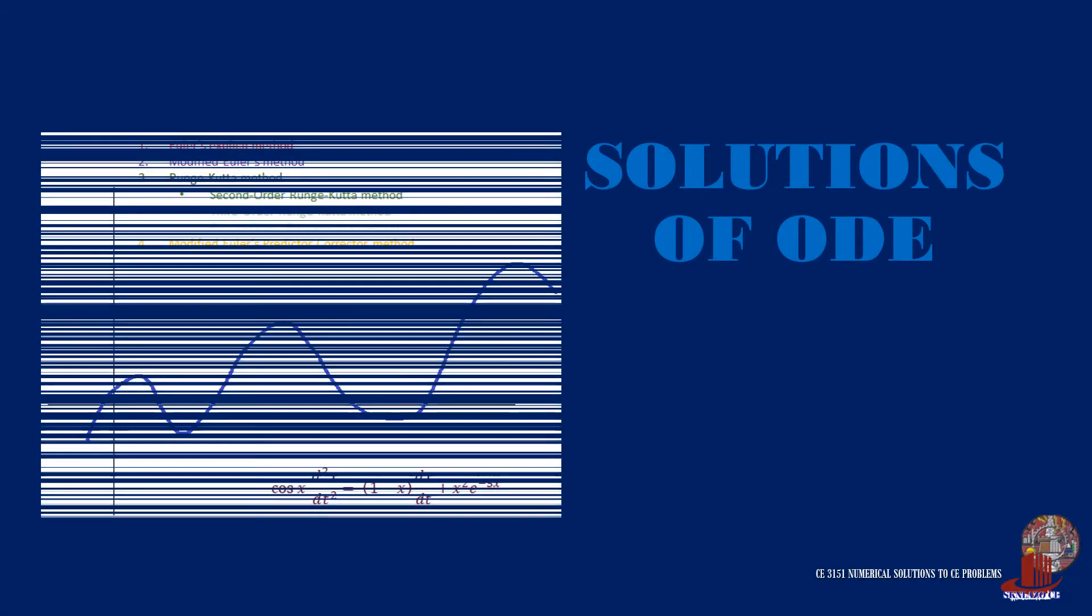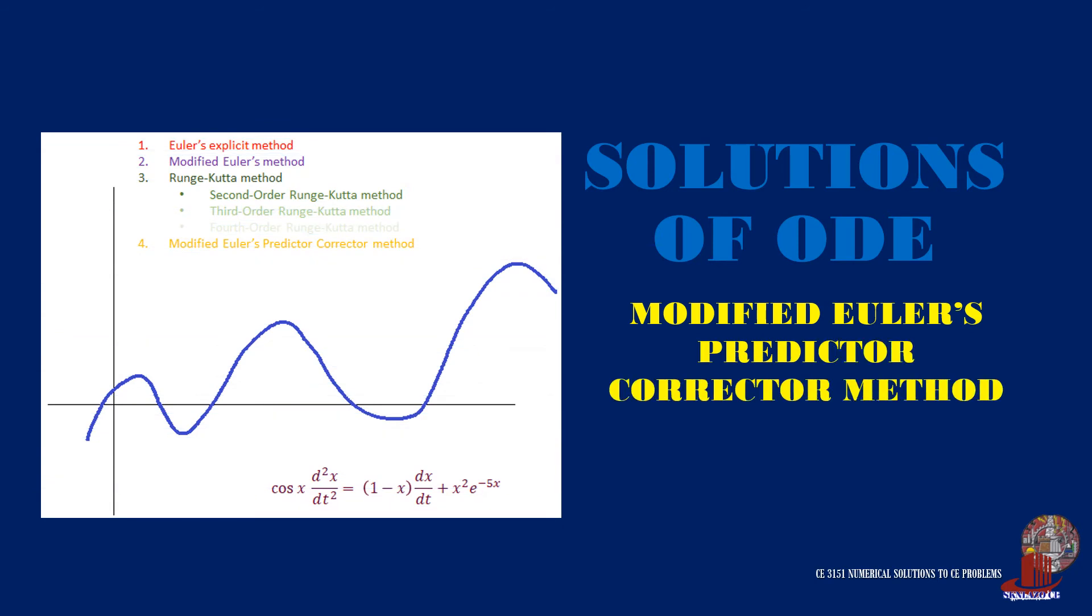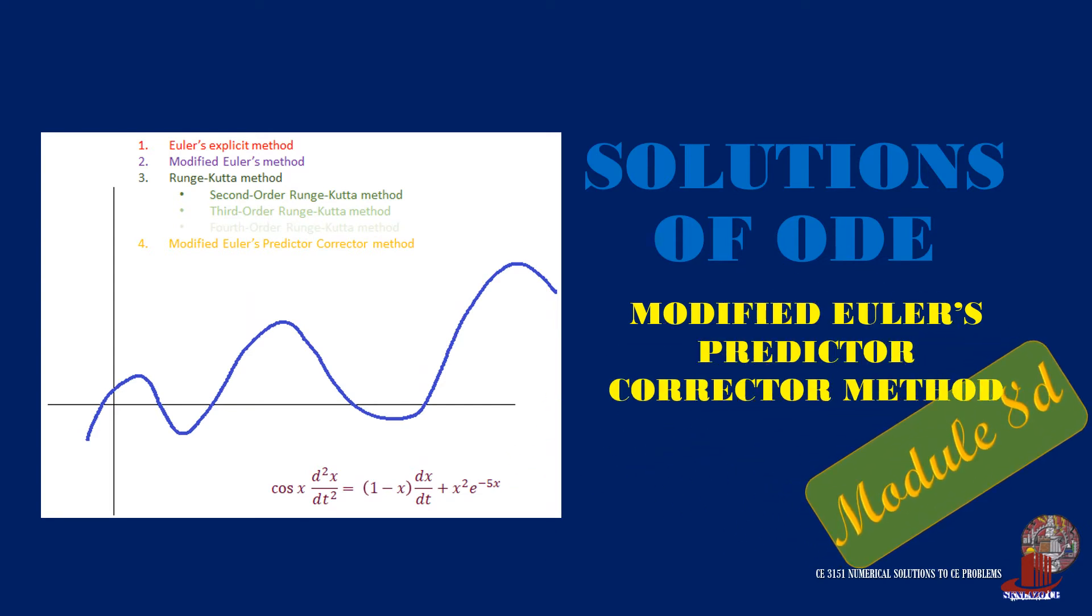The improved Euler's method attempts to lessen the error brought about by the previous Euler's method. Learn how it does the same here in Numerical Solutions to CE Problems.